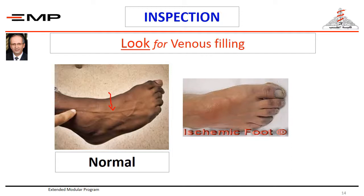However, some chronically ischemic limbs may still show guttering of the veins. On the other hand, some chronically ischemic limbs may still have superficial veins filled.